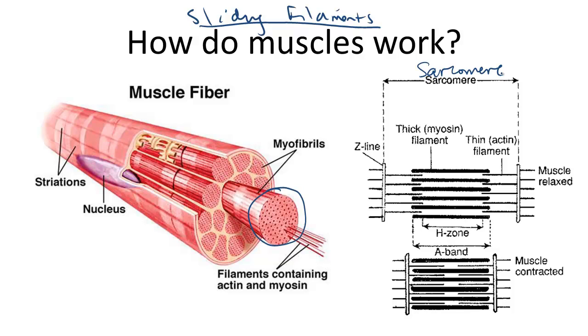We can see the sarcomere a little bit differently on the right. These repeating units of sarcomeres are found running horizontally across the length of this myofibril.